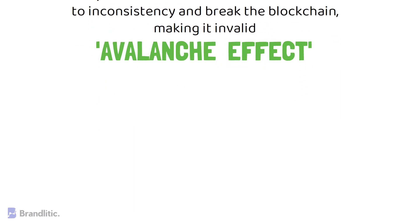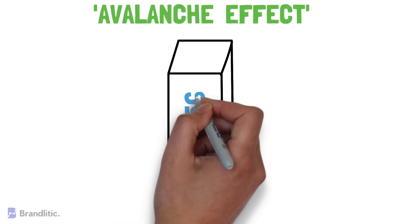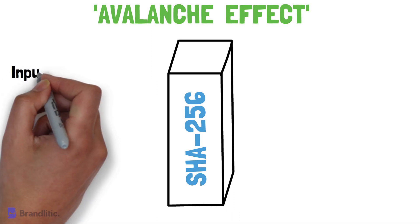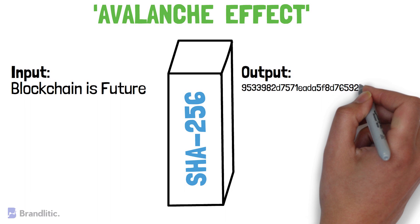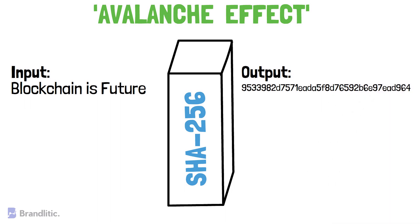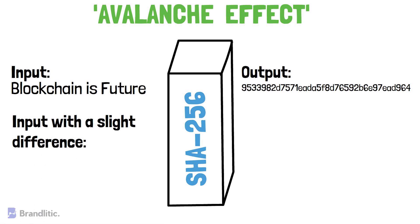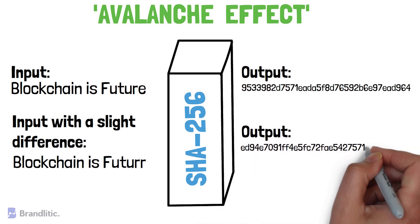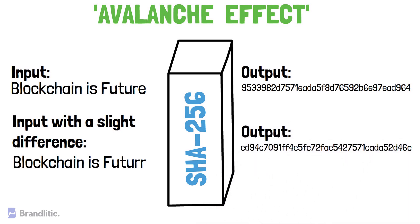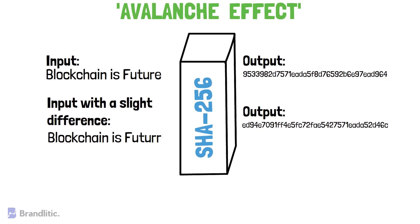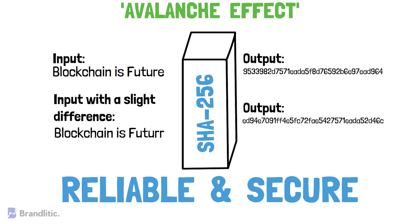Let's take an example using the SHA-256 hash function and compare outputs. In the first case, we take the input 'blockchain is future' and get a specific output. In the second case, with a slight difference — 'blockchain is futur' with an R instead of E at the end — we get a completely different output. As you can notice, there is a huge difference after changing just a single character. The results will be similar if you change any letter from lowercase to uppercase or vice versa. It's this feature that makes the data reliable and secure on the blockchain, and any change in block data will make the blockchain invalid and immutable.